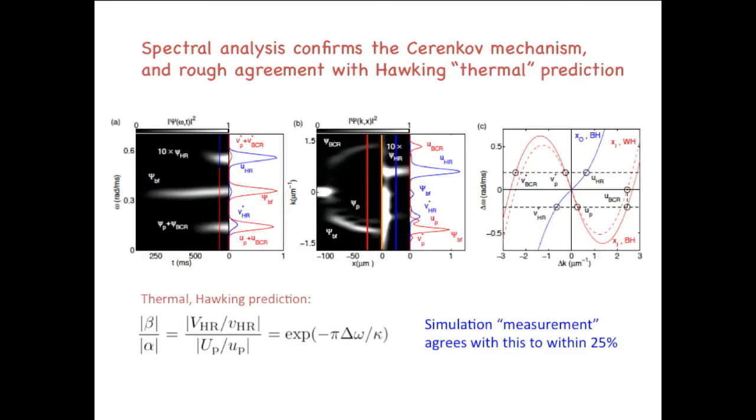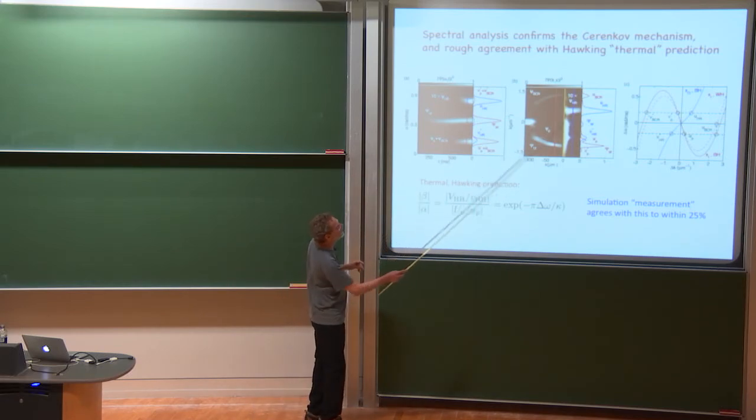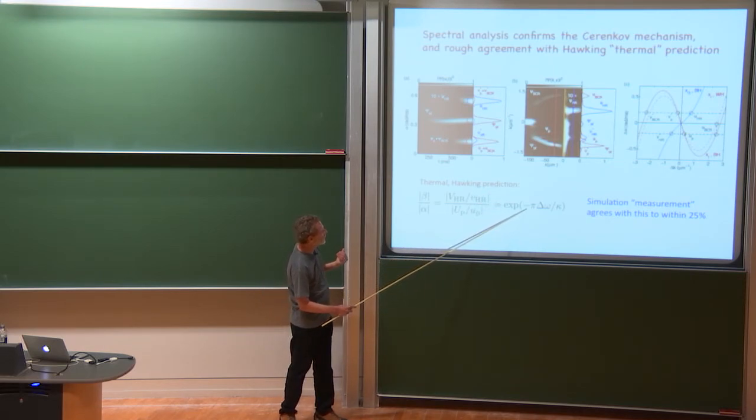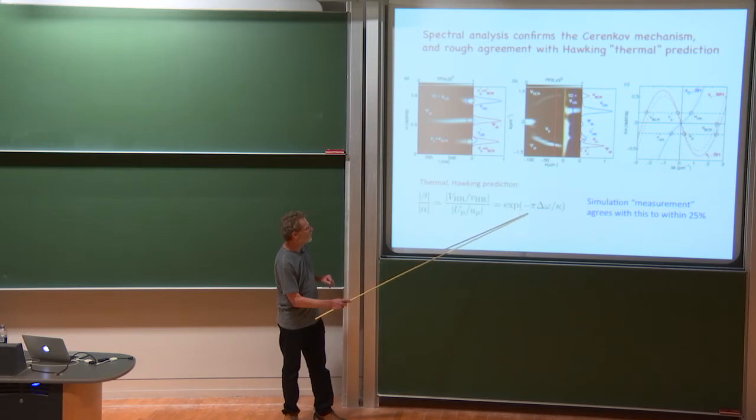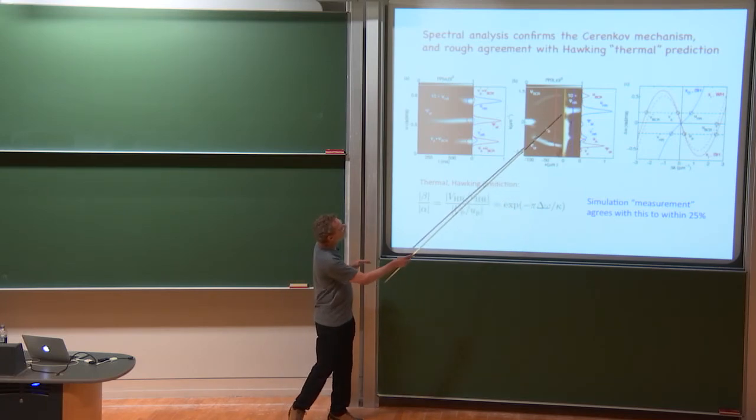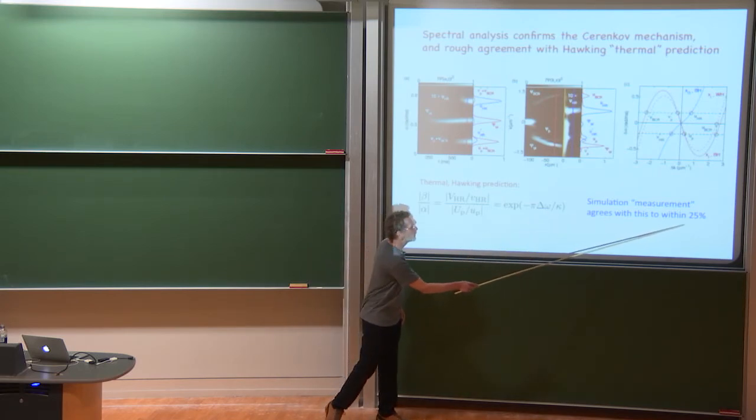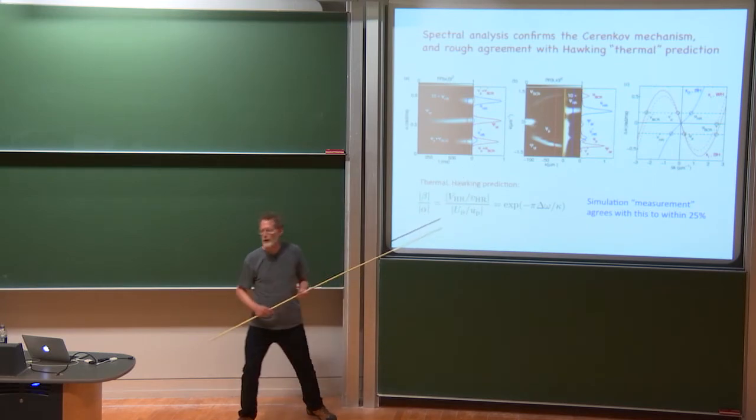And I should just end by saying that we did a spectral analysis of this, confirmed that this standing wave, all components of this system, of the waves, have zero frequency when referred to the white hole frame and we checked the Hawking prediction for the ratio of the amplitudes of the outgoing waves to the ingoing partner waves and that, according to the thermal prediction, should have been exponential of minus pi over kappa times the frequency, delta means relative to the background frequency. And then we sort of measured in the simulation what's this ratio of those two modes and it agreed with the thermal prediction to within 25%.